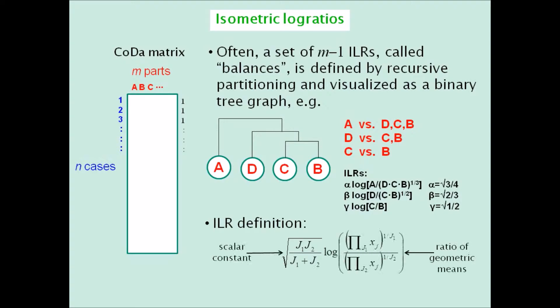The general formula shows the ratio of the geometric means, the log transform, and then a scalar constant which is imposed by the orthonormality of the basis. For example, the first ILR would have A in the numerator and the geometric mean of D, C, and B in the denominator, with a scalar constant of the square root of three quarters.